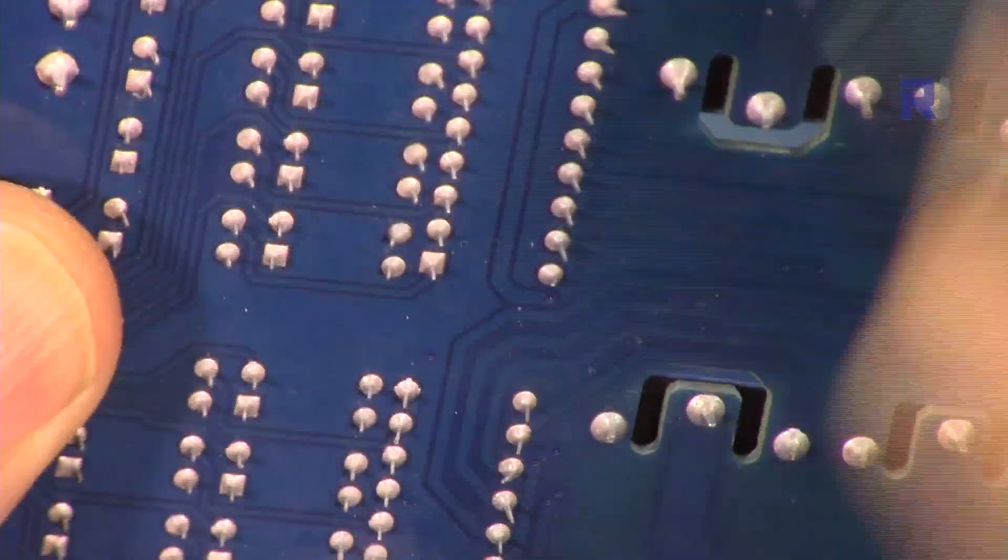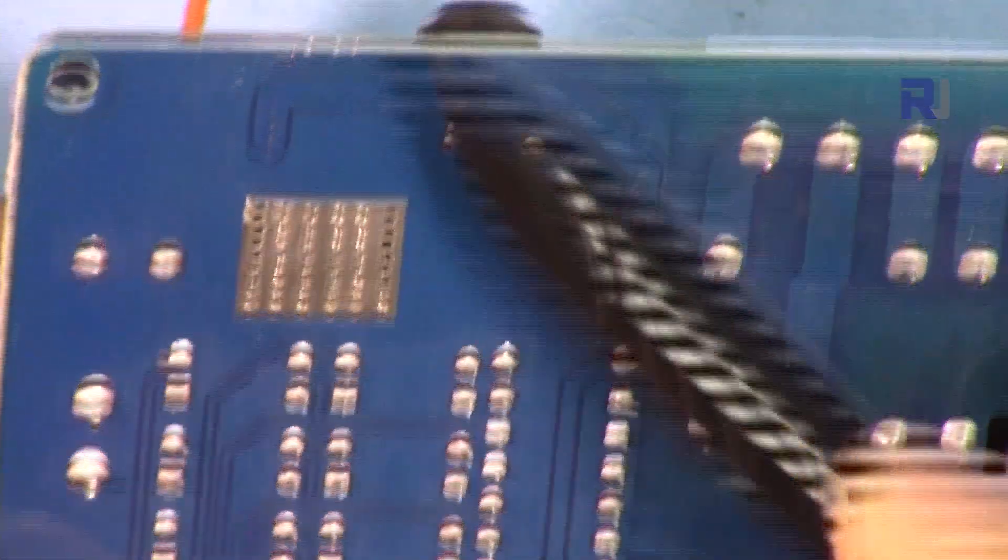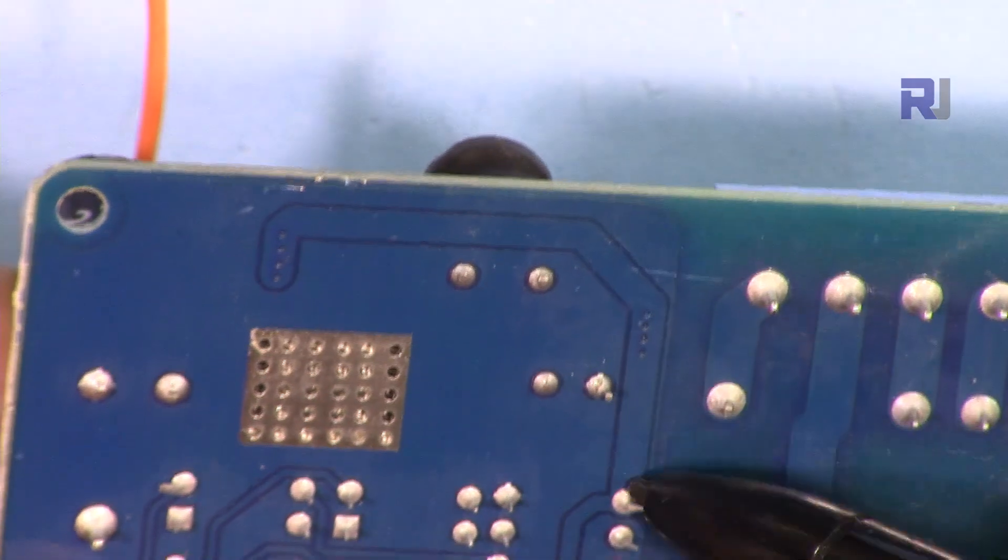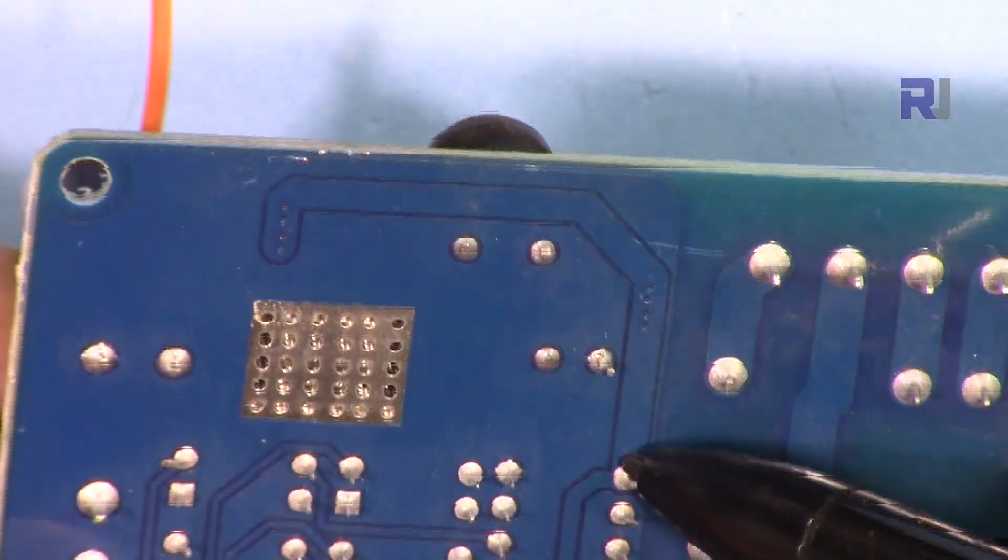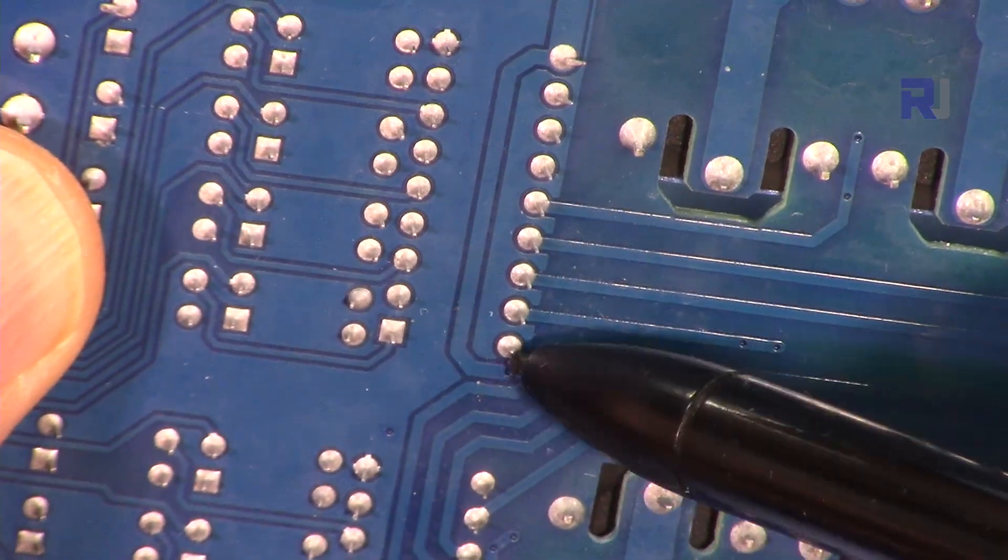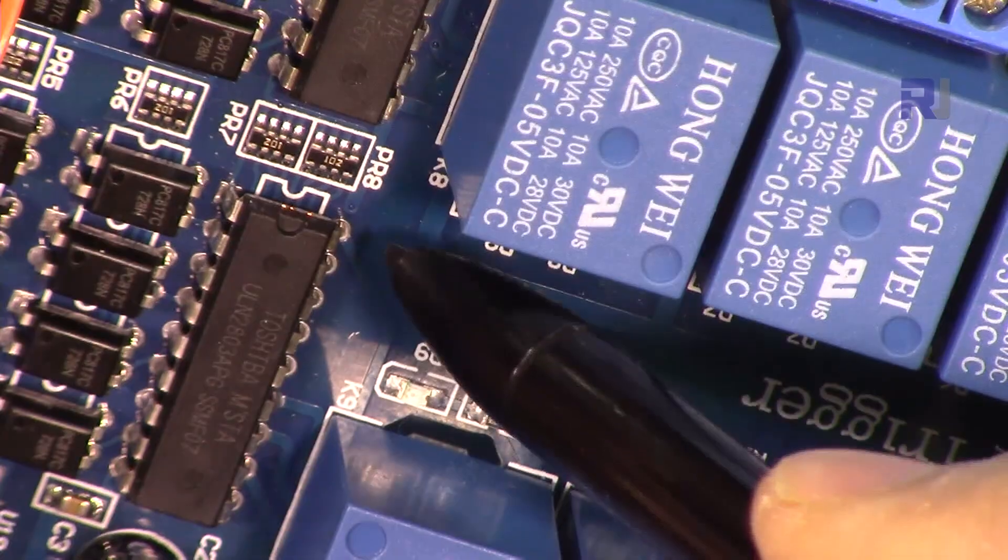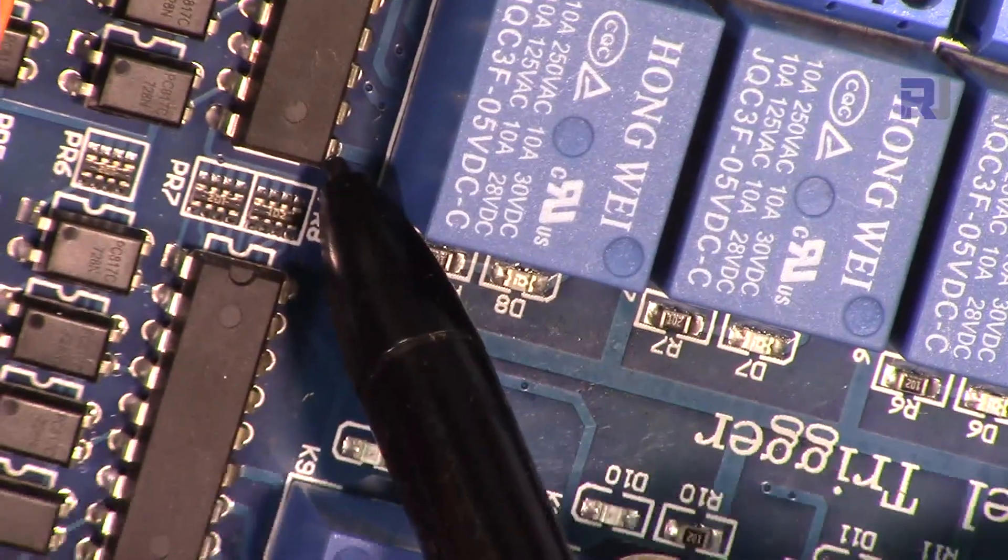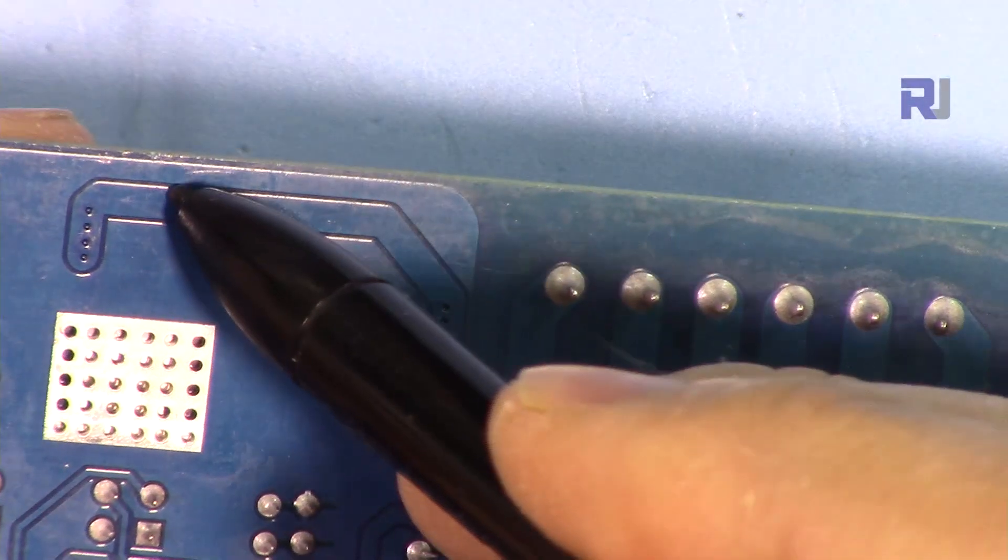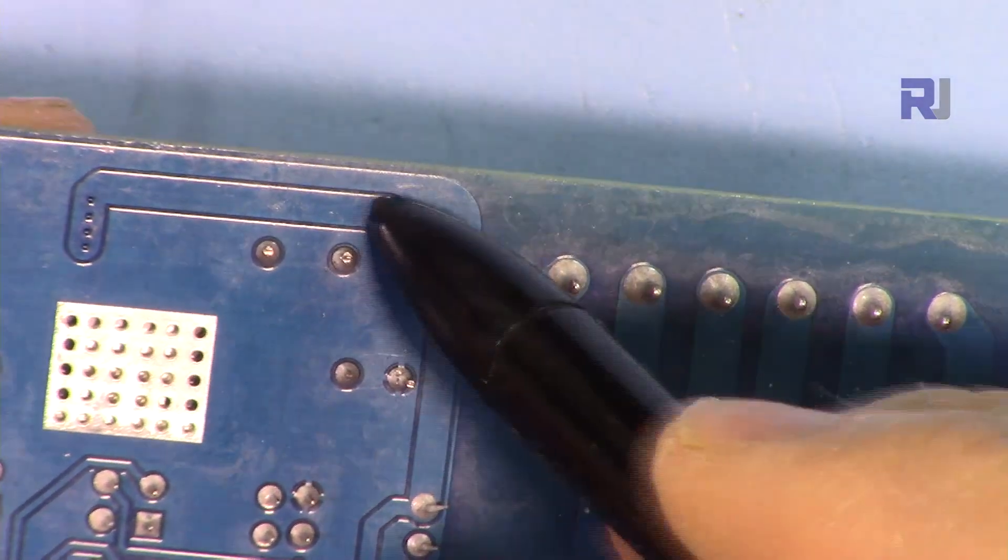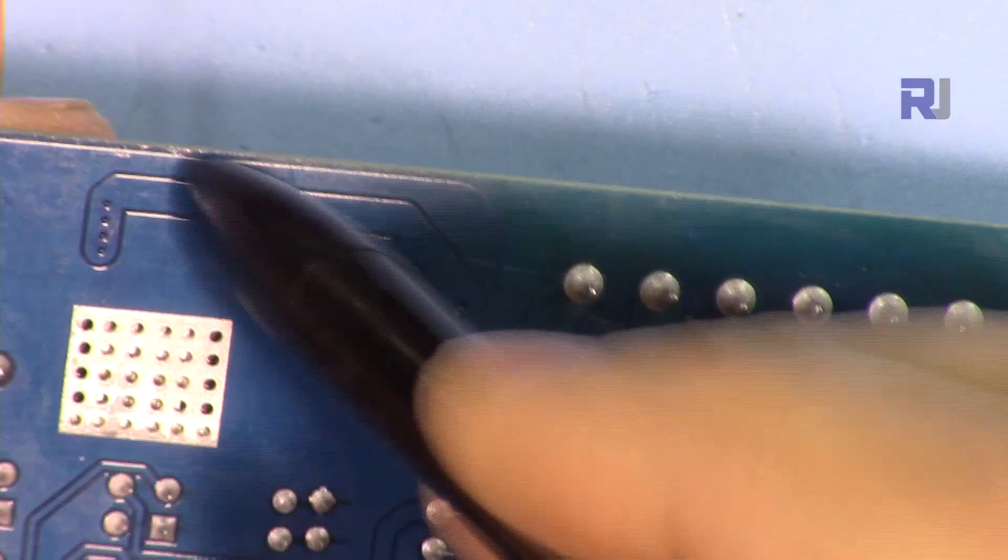And from here we have another path that goes here and feeds this chip as well, so two of them are fed from the other side. Now if I cut this path here, this chip will not receive voltage, so I can rearrange it.